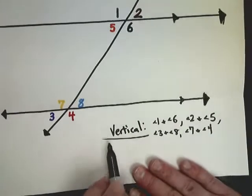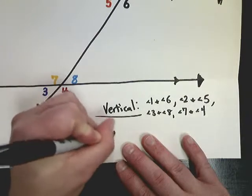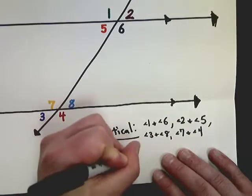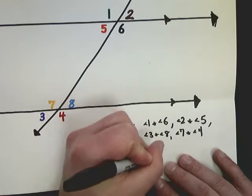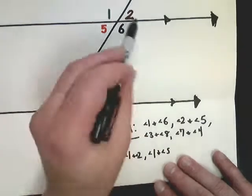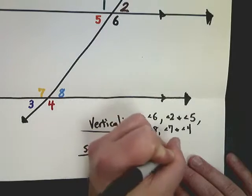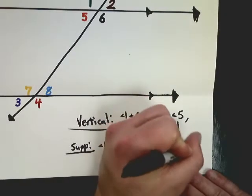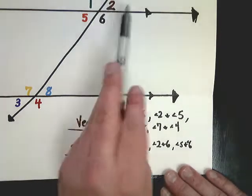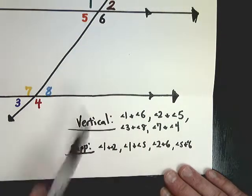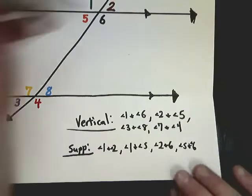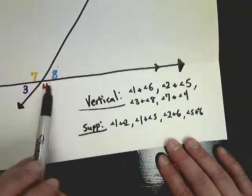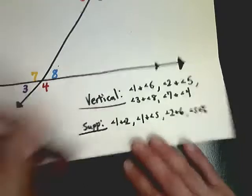I forgot to list the supplementary angles. These are the angles that add up to 180 and they are: 1 and 2, 1 and 5, 2 and 6, and 5 and 6 at the top crossing. Down below you have 3 and 7, 7 and 8, 4 and 8, 3 and 4. Anything that shares a side is a supplementary angle pair, summing to 180 degrees.